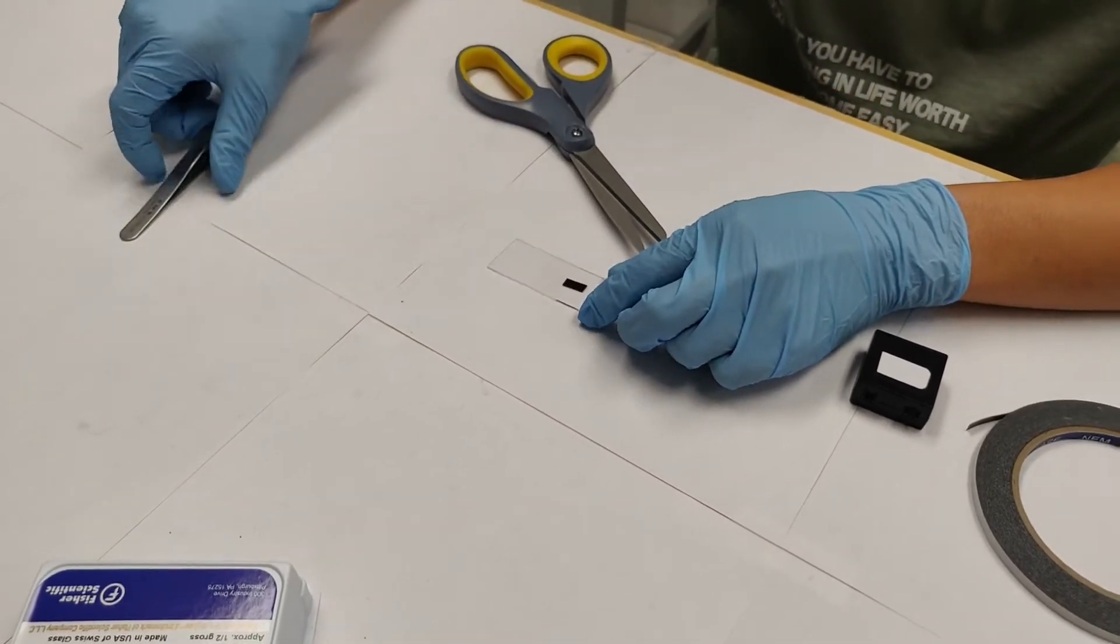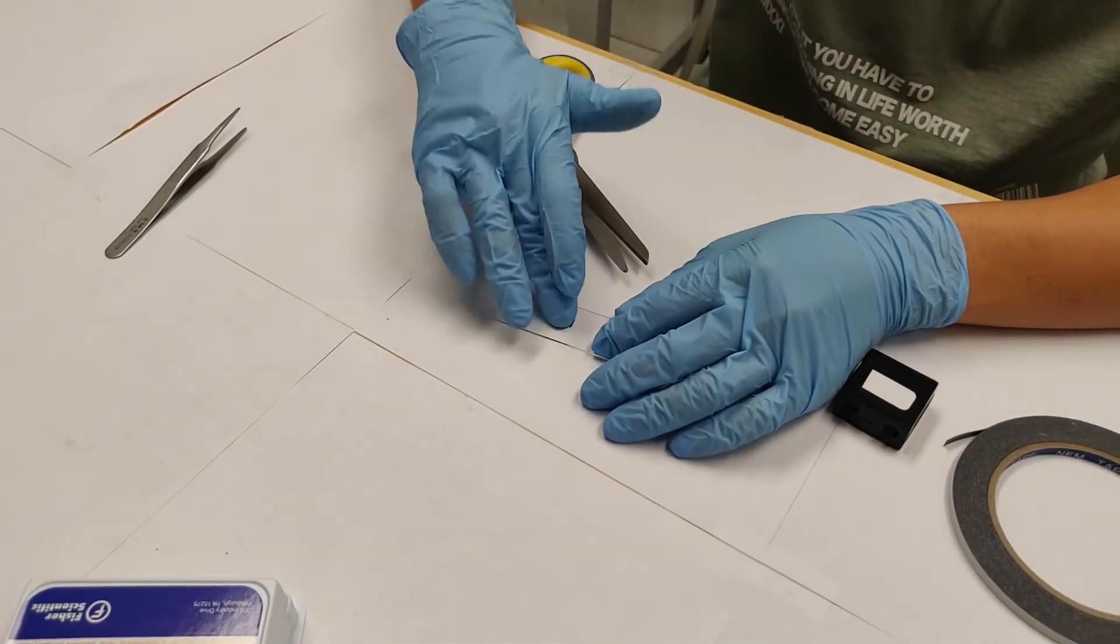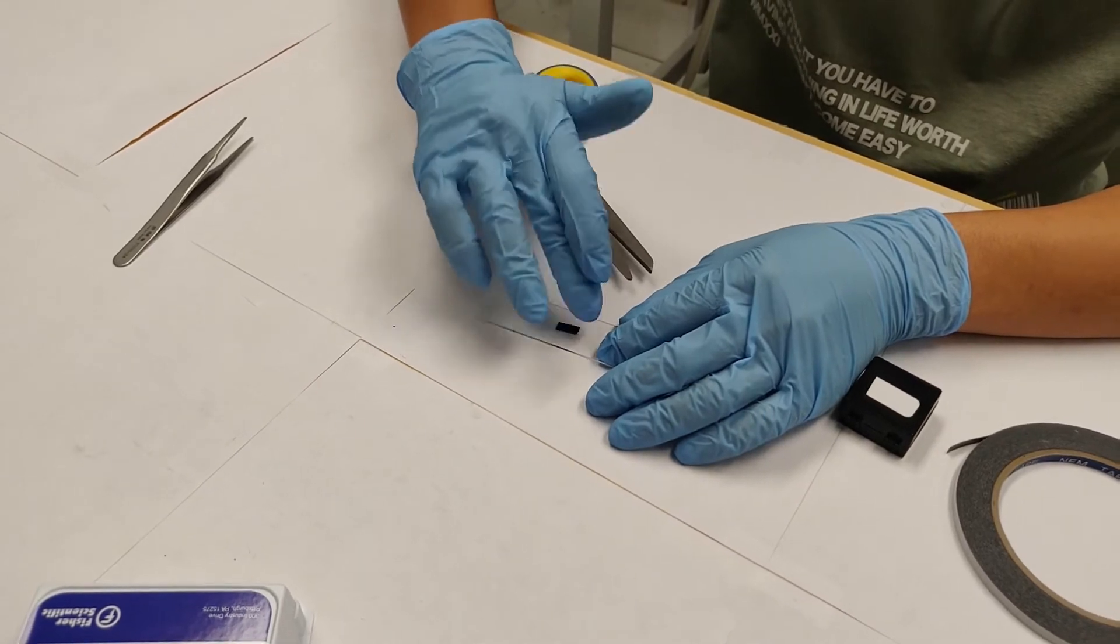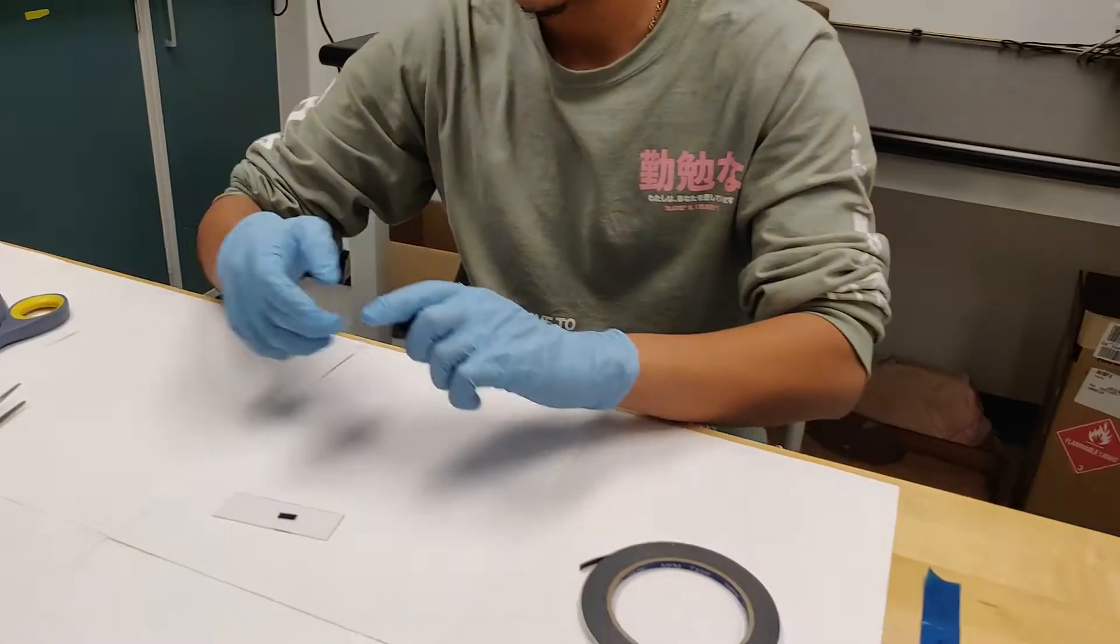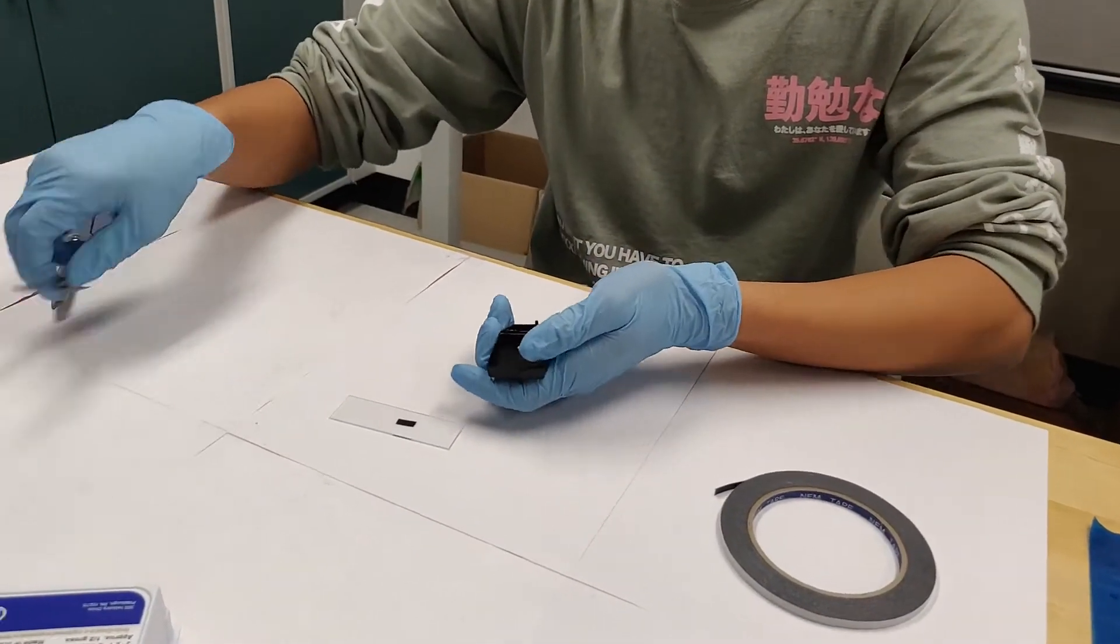To make sure that the tape isn't too sticky, you press it down with your gloves. That will make it easier to remove the substrate later. And now you place the substrate onto the tape.